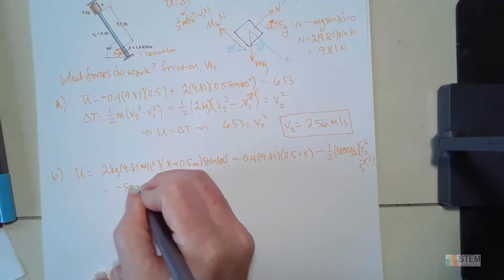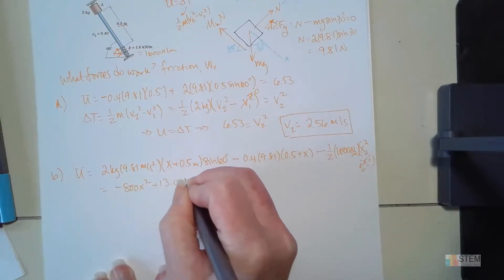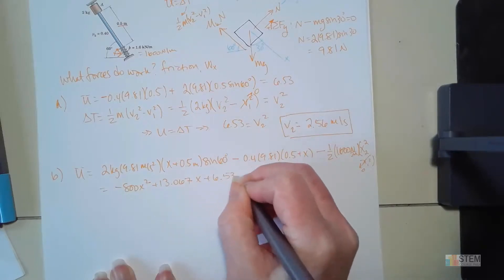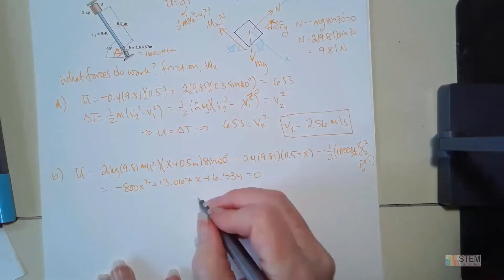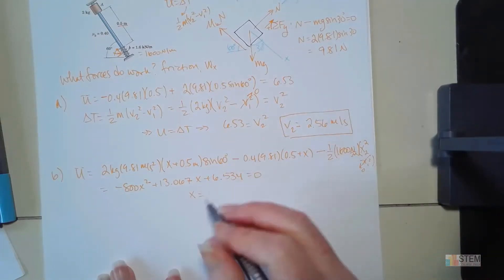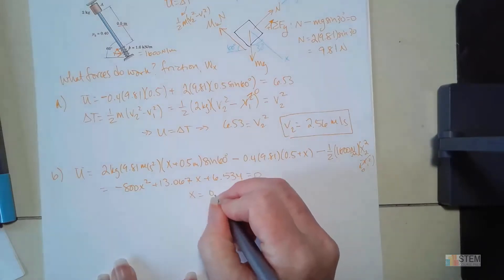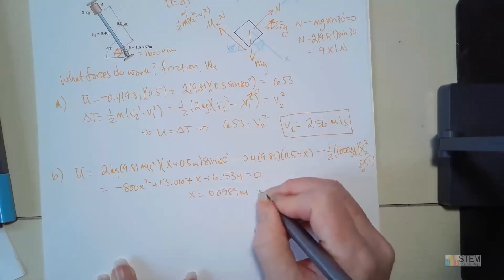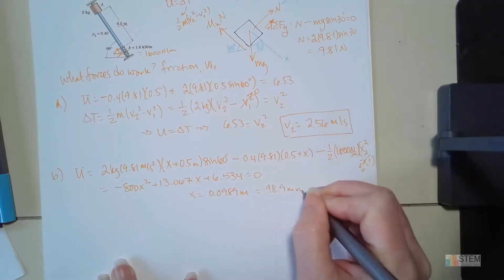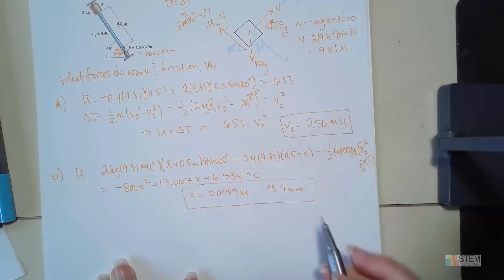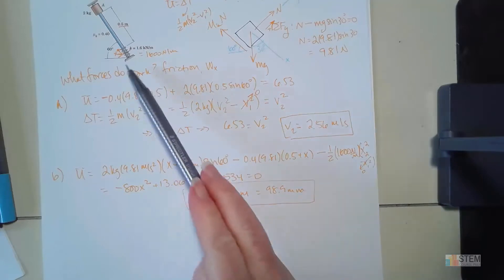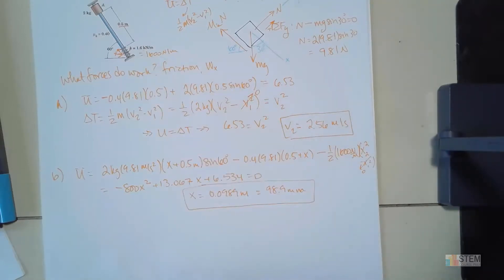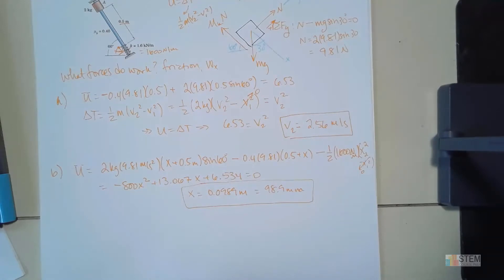Simplifying everything gives: negative 800 x squared plus 13.067 x plus 6.534 equals zero. Using the quadratic equation, x equals 0.0989 meters, or 98.9 millimeters. That is your max deflection. On these problems, if you have a spring you don't need to worry about the spring energy unless you've compressed or stretched it — once you do, you must include it because there is energy there.